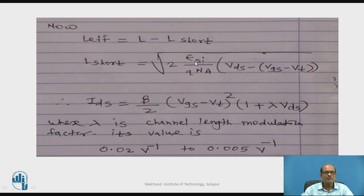Epsilon is the permittivity of Si, then Q into NA, in the bracket VDS, voltage between drain and source, VGS minus VT is the threshold voltage. And due to this short channel effect, according to short channel effect what will happen, due to increase in VDS...